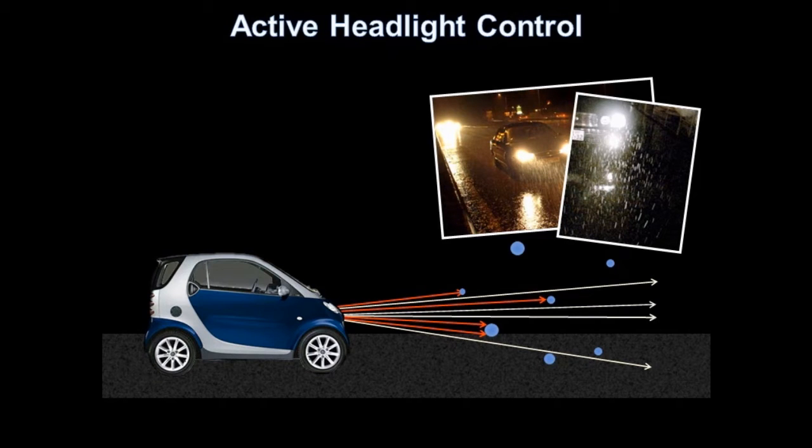However, if we can determine the rays that are illuminating only drops, we can momentarily turn them off. As the drops are moving quickly, each ray will spend only an imperceptible fraction of a second off, giving the driver the impression of headlights that see-through rain.